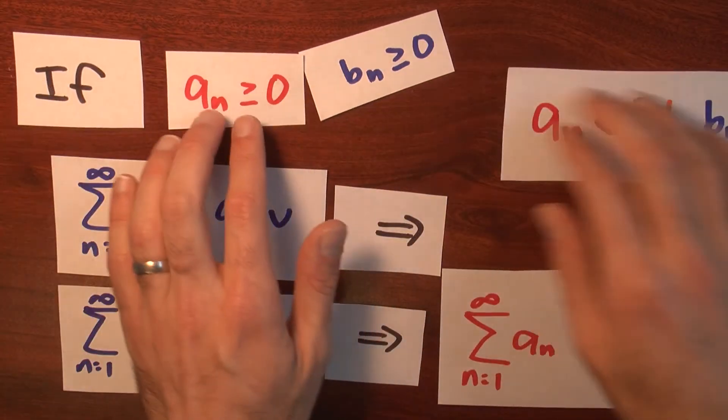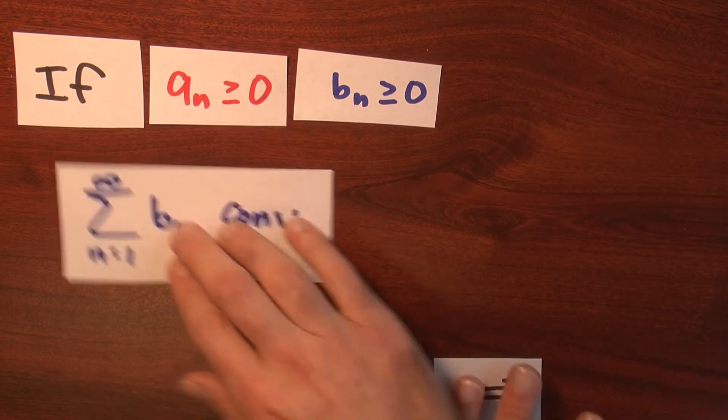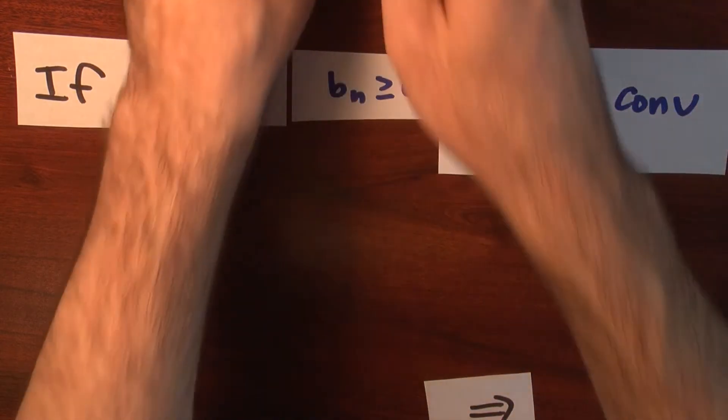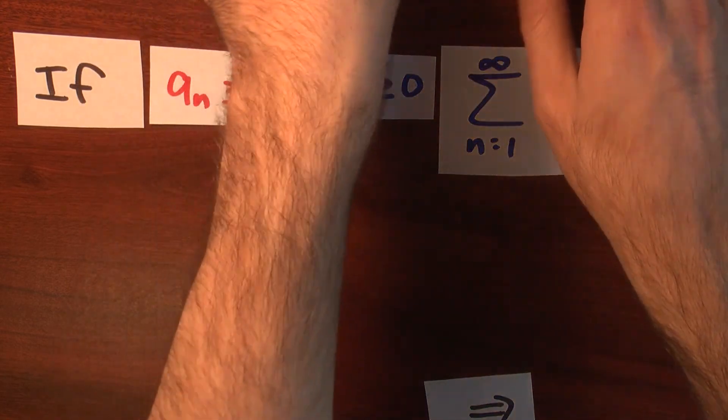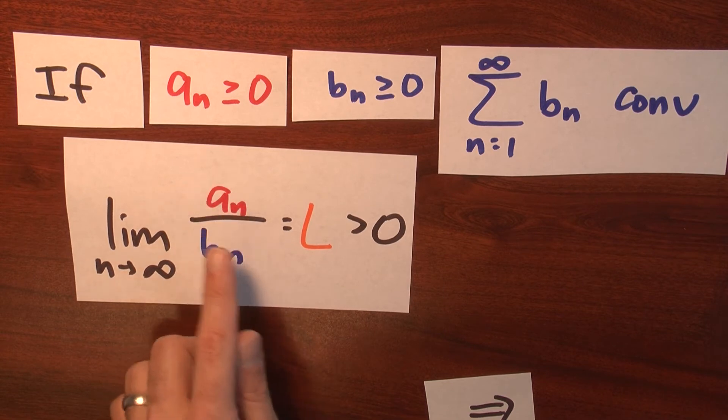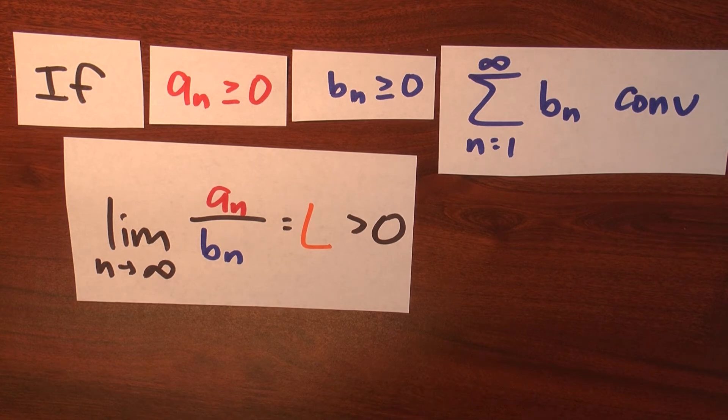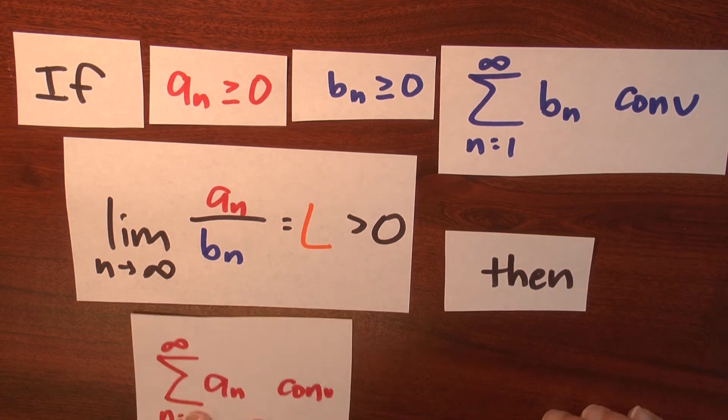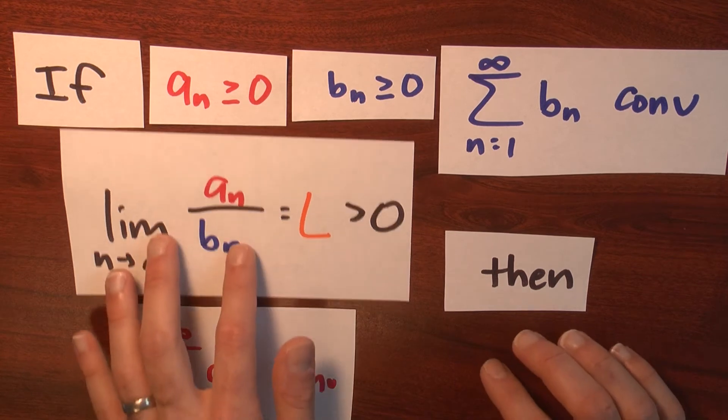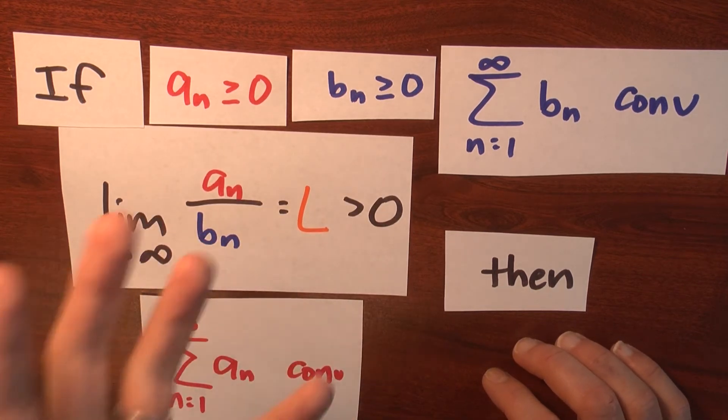Let me summarize that. So if I've got a sub n's are all non-negative, b sub n's are all non-negative, the sum of the b sub n's converges, and this limit statement—that the limit of the ratios between the a sub n's and the b sub n is some finite value L, which is positive—then I can conclude that this series, the sum of the a sub n's, n goes from 1 to infinity, converges as well.